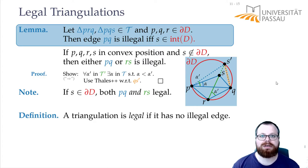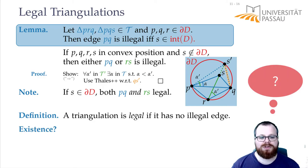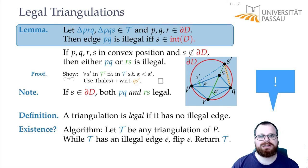We call a triangulation legal if it has no illegal edges. Now how can we prove that a legal triangulation exists? Can you do that? There is a very simple algorithm. We start with any triangulation, and while there is an illegal edge, we flip it. When we cannot do a flip anymore, when we don't find an illegal edge, then we return the triangulation.